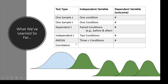An ANOVA can be three or more conditions. So what we've done so far covers every approach for every scenario where we have a number outcome across different conditions — one condition, two conditions, or three or more. These tests allow us to look at when we've assigned people to groups, how they differ on their number outcomes.